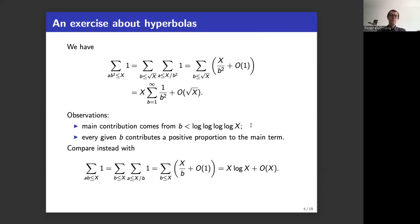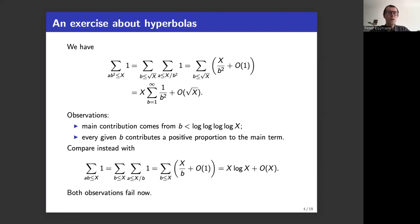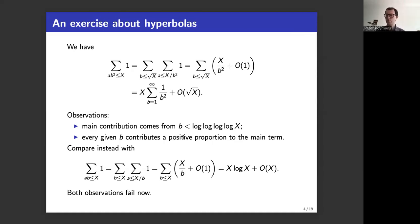Now let's compare with a slightly different exercise: instead of weights one and two on the variables, we count a·b ≤ x. In this case the answer is x·log x + O(x). Unlike the previous example, both observations fail: the main contribution does NOT come from fixing b small, and every given b contributes x — not a positive proportion of the main term.